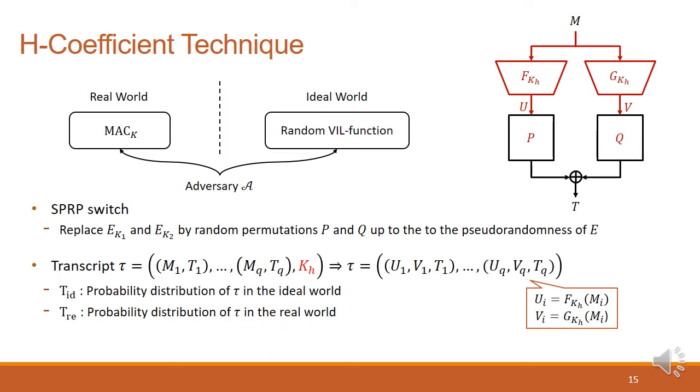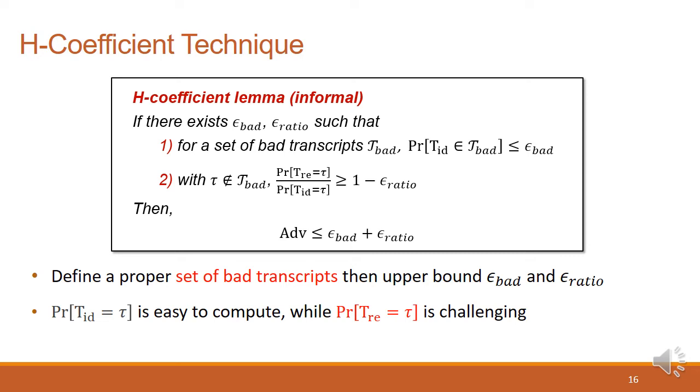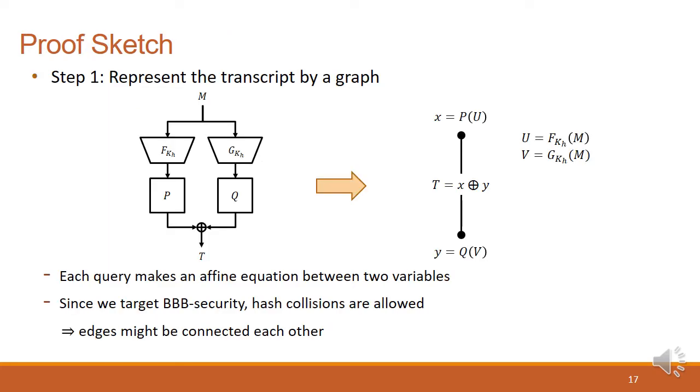Let us introduce a brief overview of our security proof. This is the main lemma of the H-coefficient technique. If the probability to have bad transcript is small, and the difference between the ideal world and the real world is negligible without having the bad transcripts, the H-coefficient lemma says that the distinguishing advantage is also negligible. I will not cover this precisely, but the important point is we should define a proper set of bad transcripts, then upper bound two values, epsilon-bad and epsilon-ratio. Also, the probability of getting a transcript in the real world is the most challenging one in the proof.